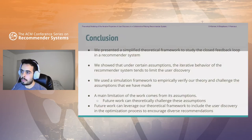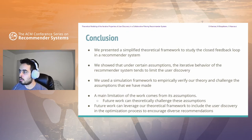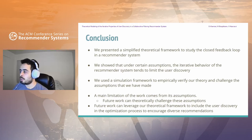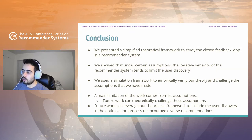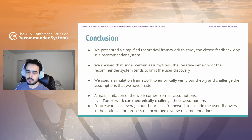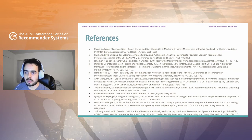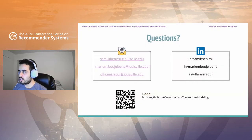To conclude, we presented a simplified theoretical framework to study the closed feedback loop in a recommender system. We showed that under certain assumptions, the iterative behavior of the recommender system tends to limit user discovery. We used a simulation framework to empirically verify our theory and challenge the assumptions we made. A main limitation of the work comes from its assumptions, so future work can theoretically challenge these. Future work can also leverage our theoretical framework to include user discovery in the optimization process to encourage diverse recommendations. Our code is available on GitHub.